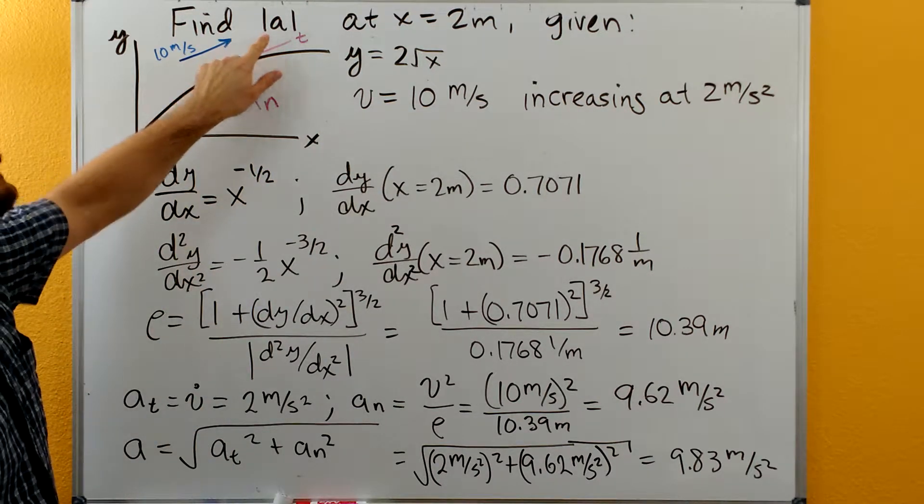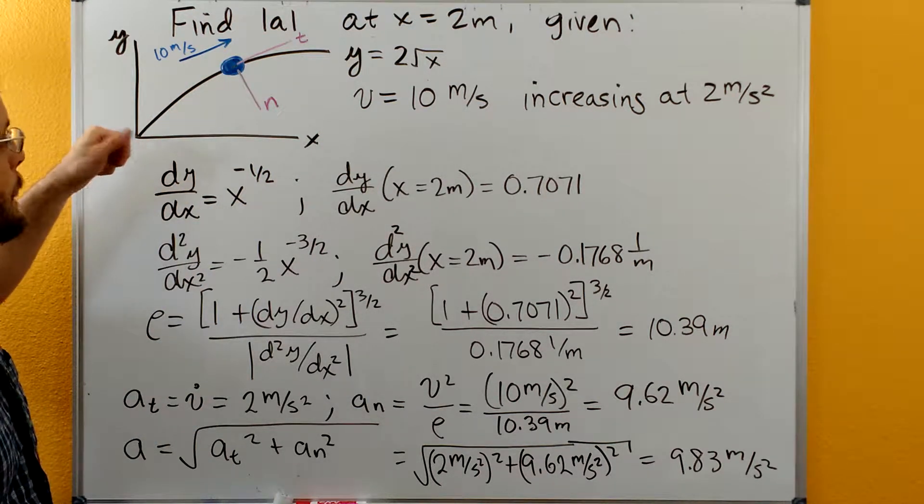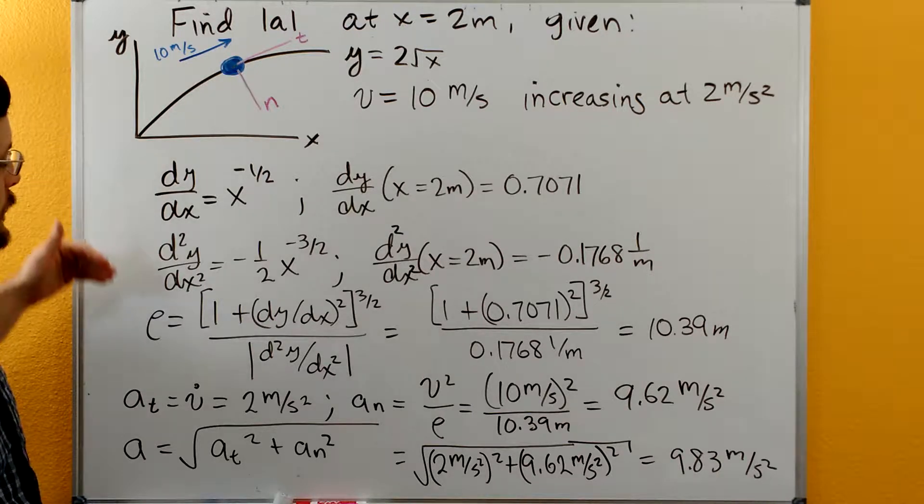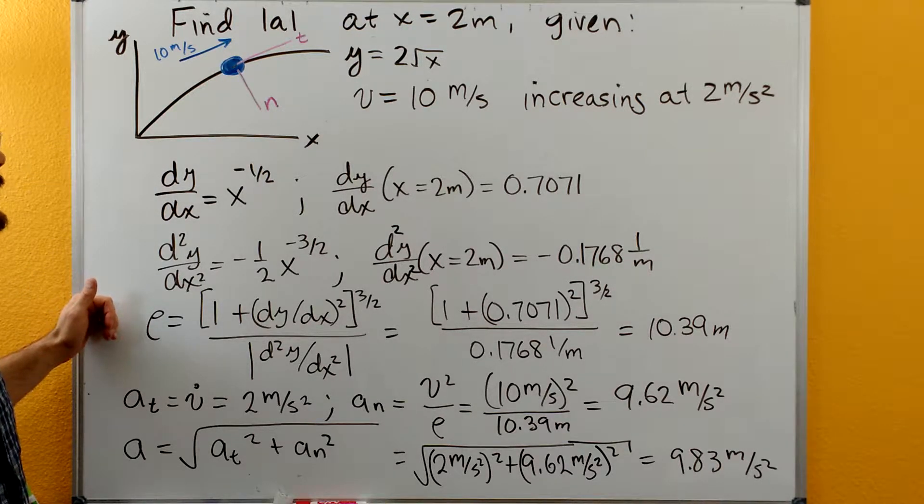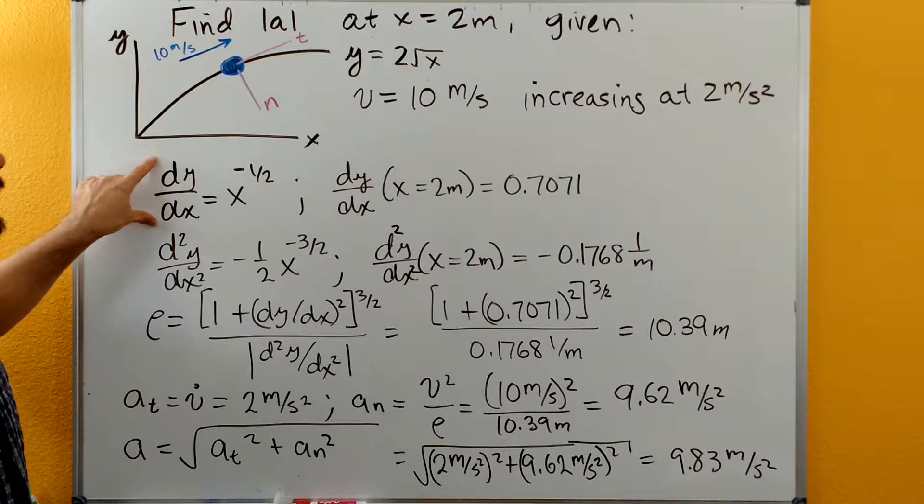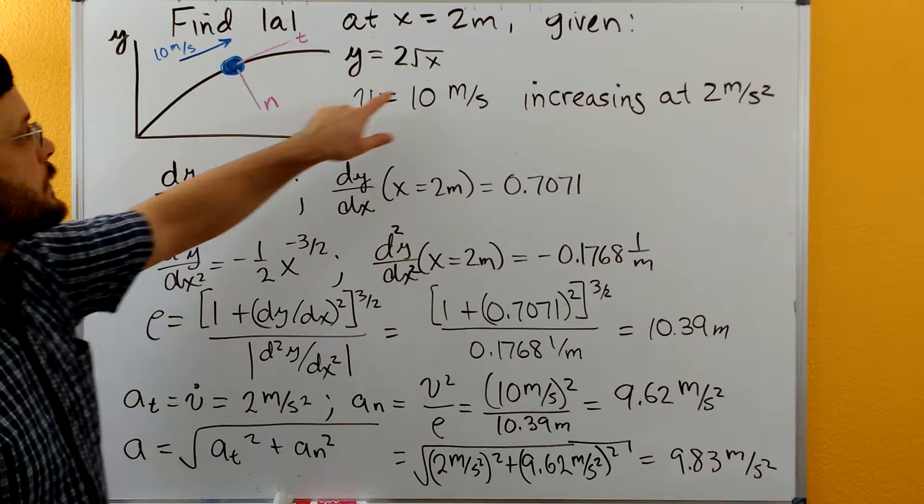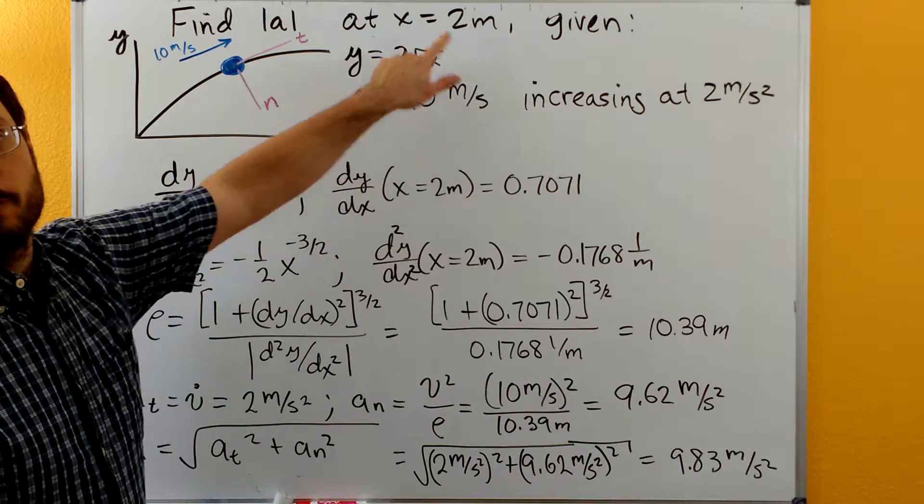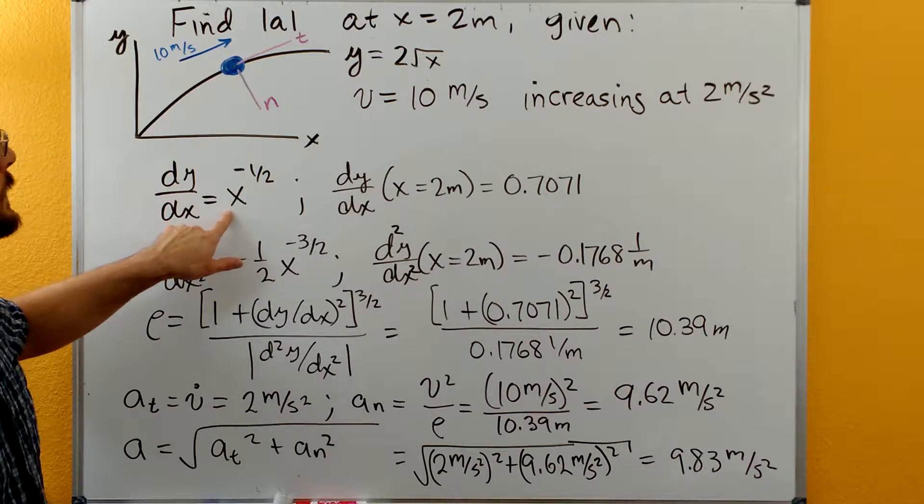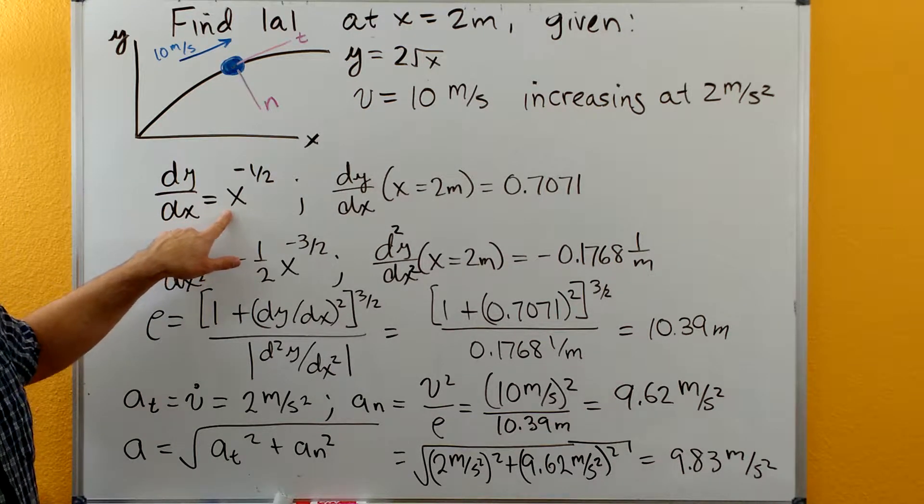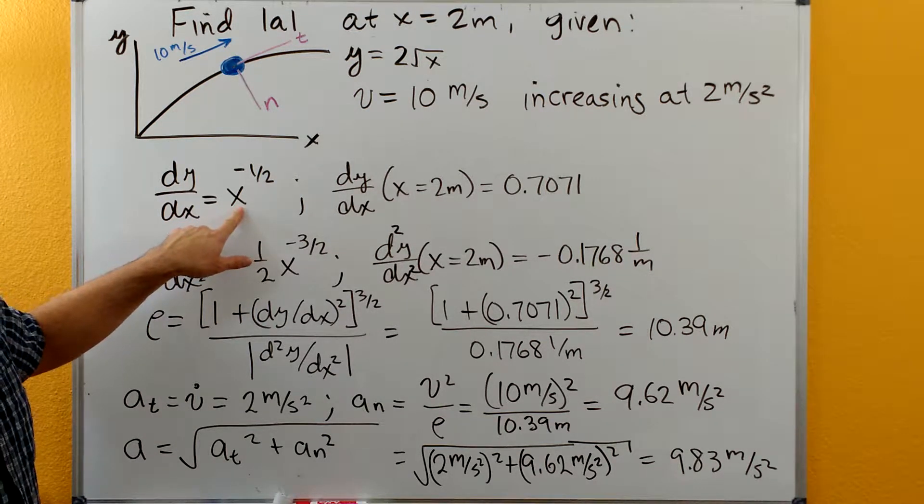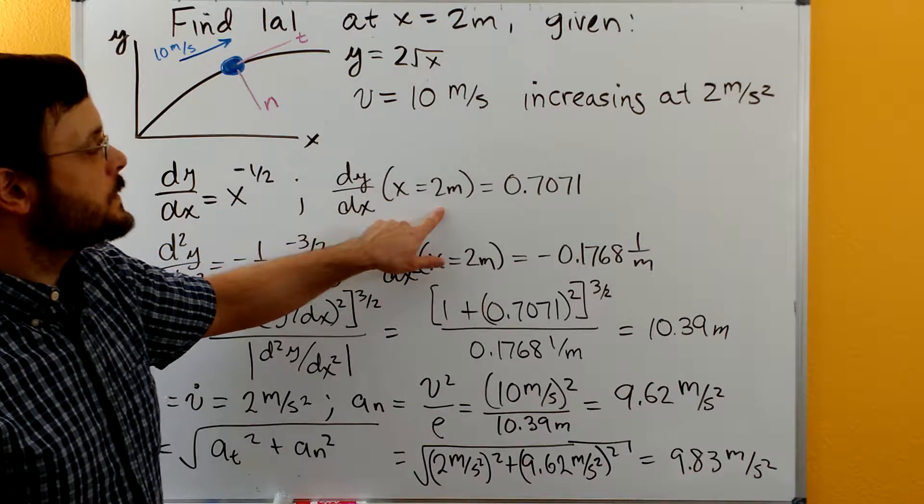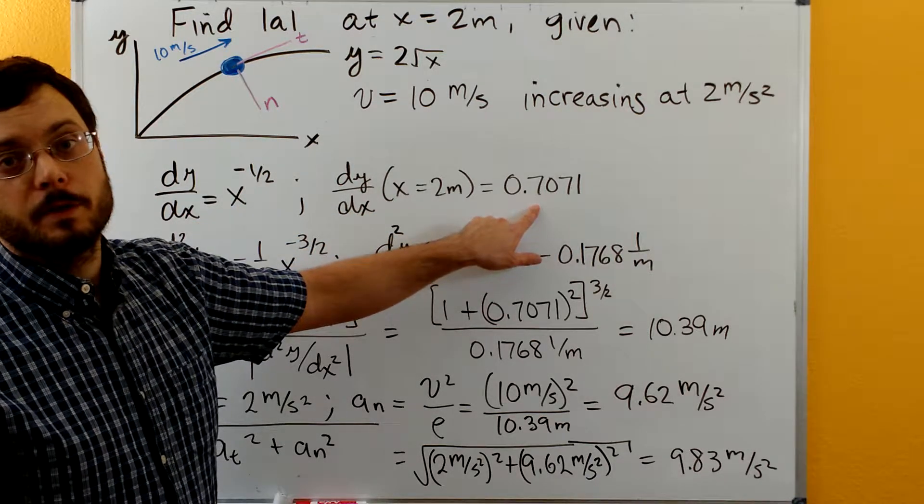We're just trying to find the magnitude of the acceleration. So our first step is going to be to calculate the radius of curvature. We're going to calculate our first derivative of our function with respect to x. So it'll be x to the one-half times two. So the one-half will move out in front. So that would be two divided by two will give us one, and that would be x to the negative one-half. We'll plug in x is equal to two and get 0.7071.